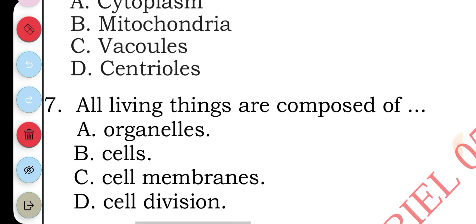Question seven: all living things are composed of: A organelles, B cells, C cell membranes, D cell division. The answer to question seven is B, cells.